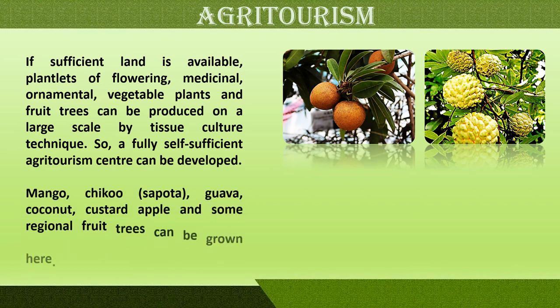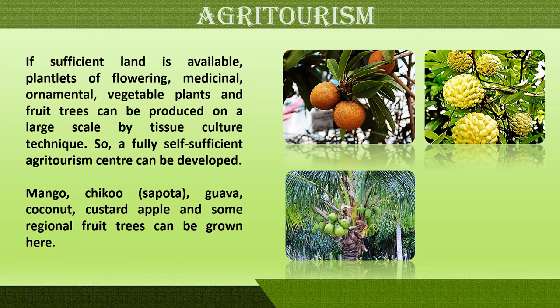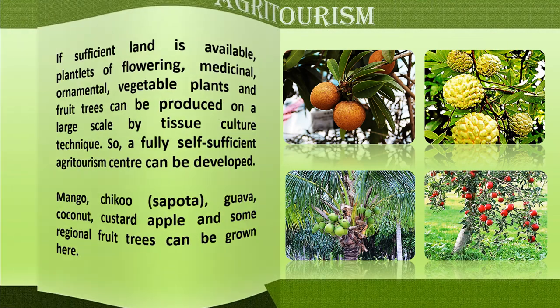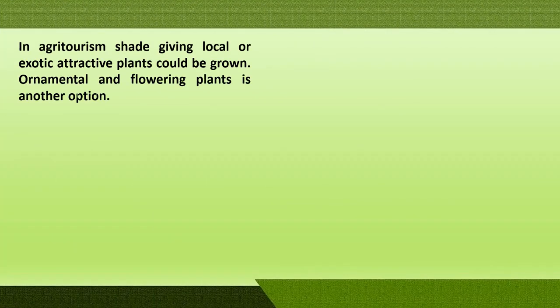In agritourism, regional fruit trees such as mango, chikku, guava, coconut, and custard apple can be grown. Shade-giving local or exotic attractive plants could also be grown. Local plants are those grown in the area, while exotic plants come from outside the region or from abroad. Ornamental and flowering plants, along with rare specimens, can be grown to attract visitors.